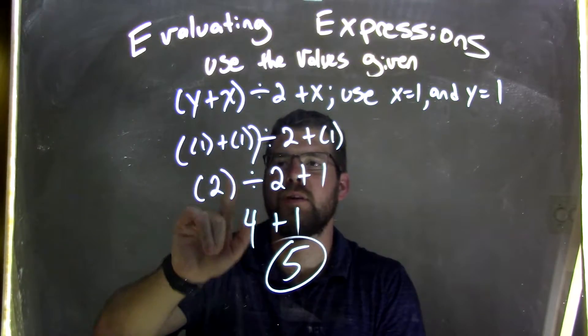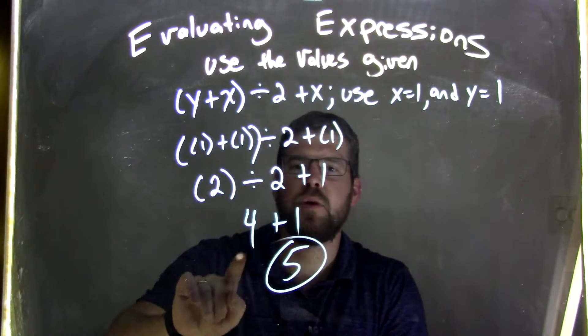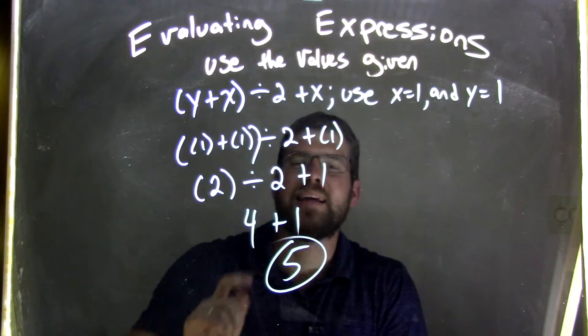Bringing it back down. Inside the parentheses, 1 plus 1 is 2. Parentheses come first, then we have division. 2 divided by 2 is 4, bringing it down to 1. 4 plus 1 is 5.